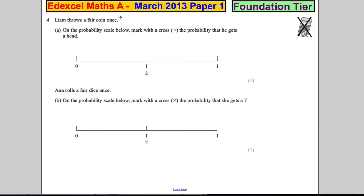Question 4: Liam throws a fair coin once. A fair coin just means it's a normal coin with the same chance of coming up heads as tails, so 50-50. On the probability scale, mark with a cross the probability that he gets a head. Well, I've just said that it's a half. There's one head out of two possibilities, so therefore it's a half.